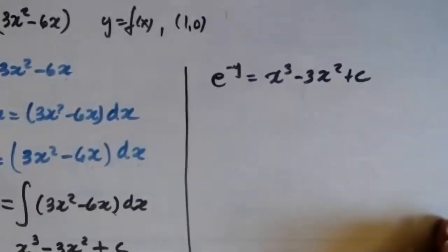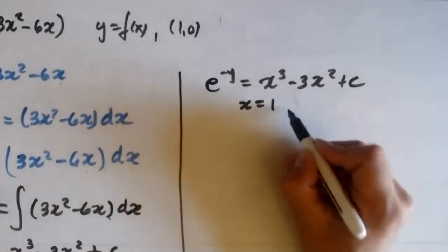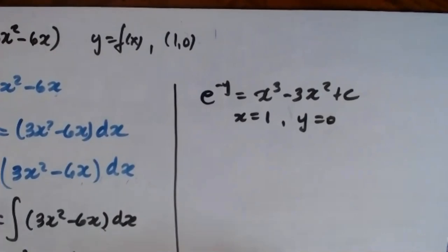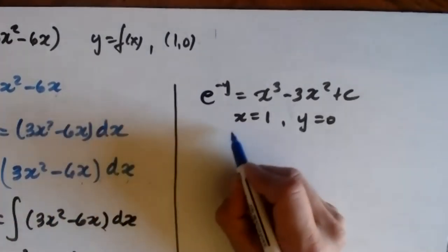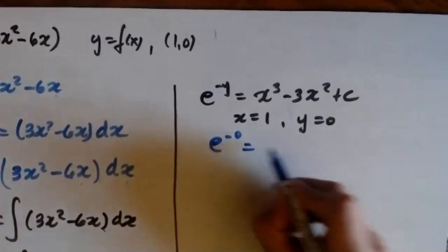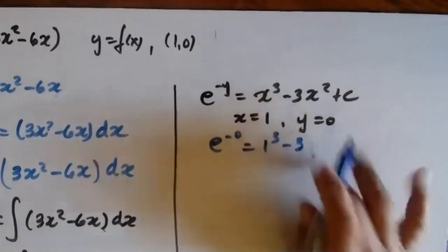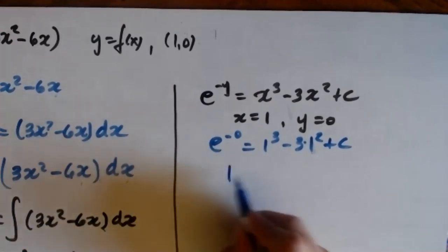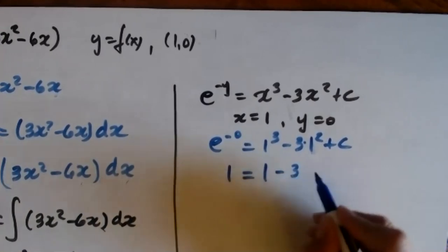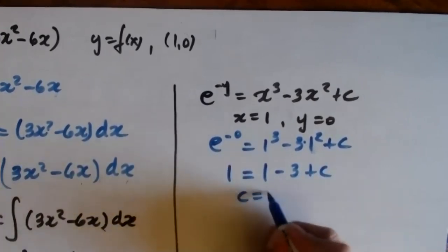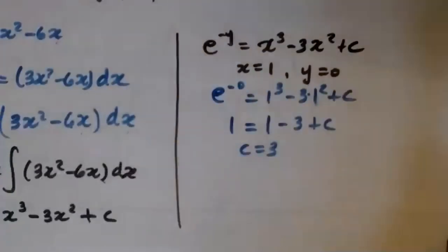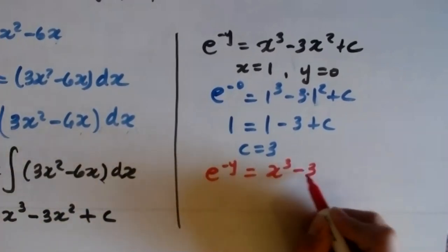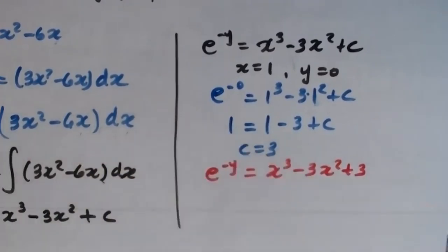Applying the initial condition x = 1, y = 0: e^(−0) = 1³ − 3·1² + C, so 1 = 1 − 3 + C, giving C = 3. So the solution is: −e^(−y) = x³ − 3x² + 3, or equivalently e^(−y) = x³ − 3x² + 3.